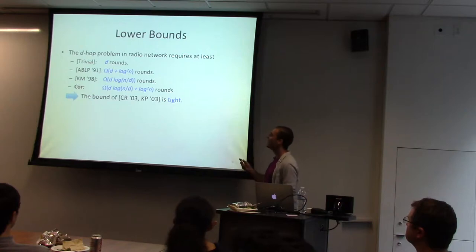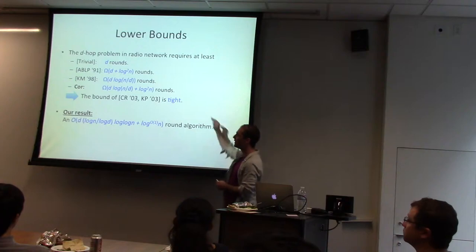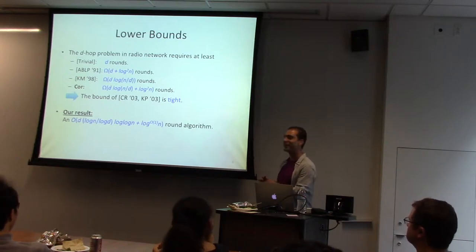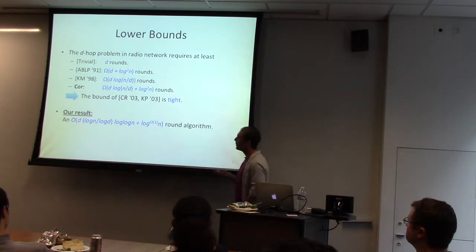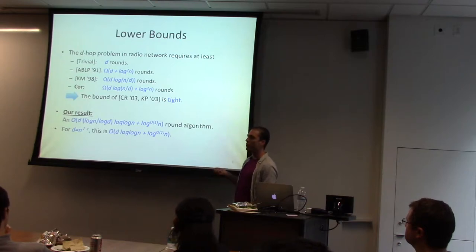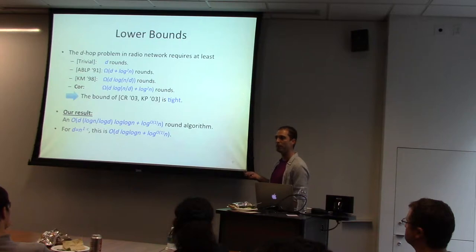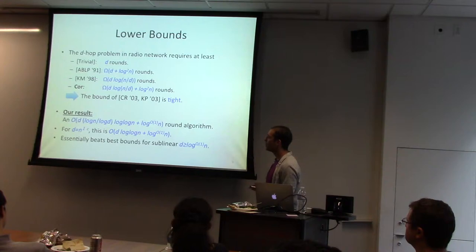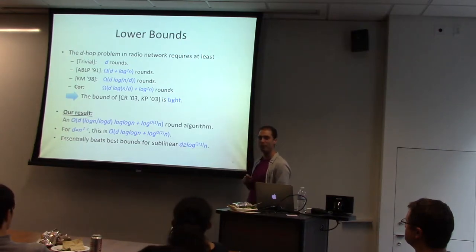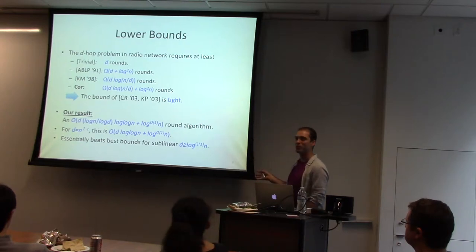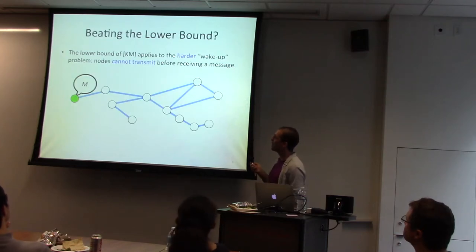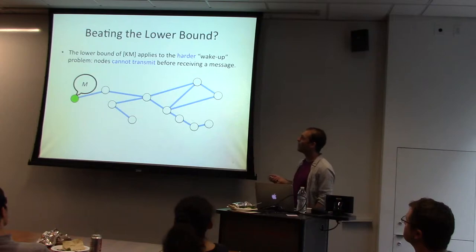Here are our results — and this might seem suspicious since I just told you that bound is tight. We get a better bound: D log N over D times log log N plus polylog. If D is polynomial, this is D log log N plus polylog N, whereas the previous bound still gives D log N. In general, this essentially beats all previous bounds so long as D is sublinear-ish and at least some polylog term.